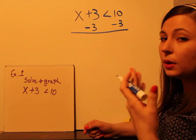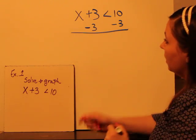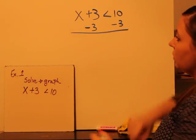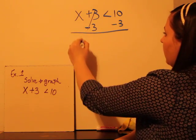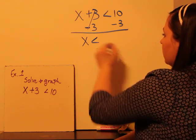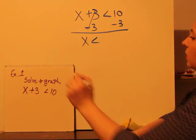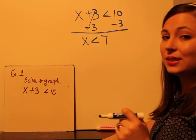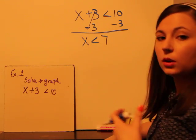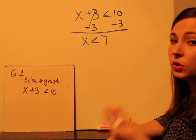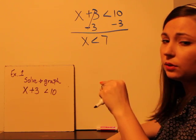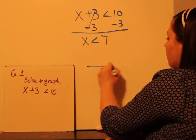And the way that I'm showing my work is the way you're going to show your work. Positive 3, minus 3, cancel. We have x and it's less than 10 minus 3 is 7. So we have that x is less than 7. Now we're going to graph. On your problems you're probably going to have a number line already there for you.